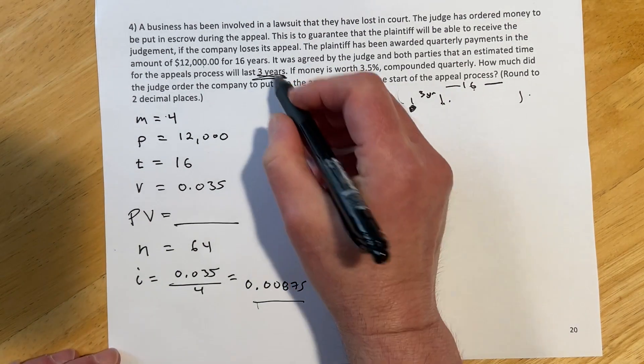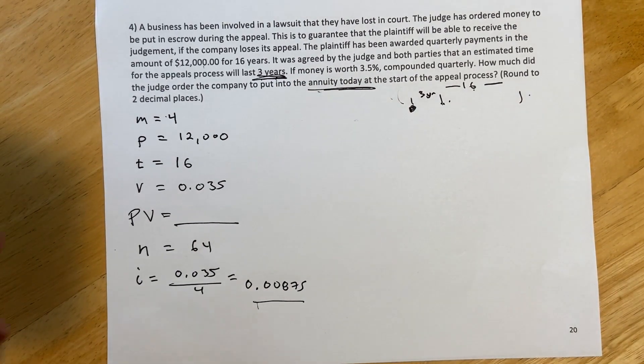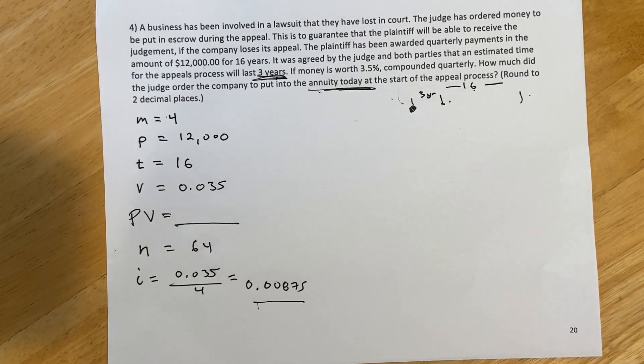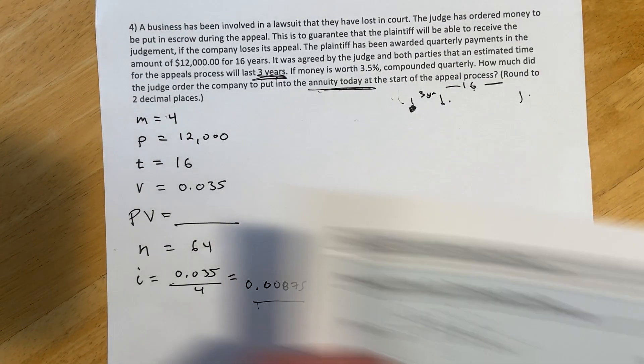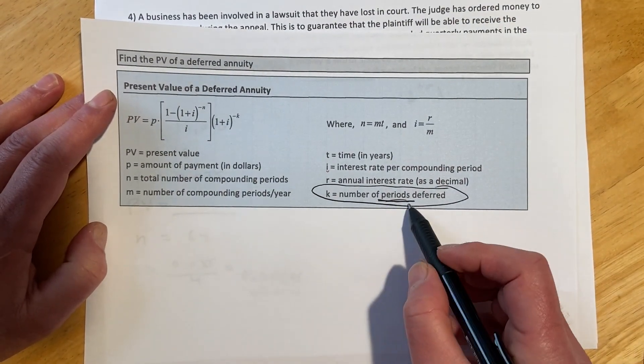And then we have one more thing we have to find, and that's this three years. So that's this deferred. And remember in our, let me grab this back for a second, we had this last constant K, which is the number of periods deferred.